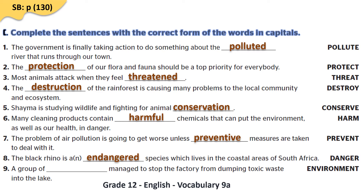In the last sentence: a group of environmentalists managed to stop the factory from dumping toxic waste into the lake. Here we have the noun environment, but we need the noun describing people who support the environment, which is environmentalists.